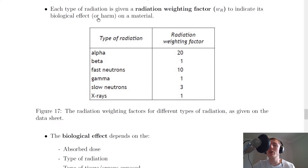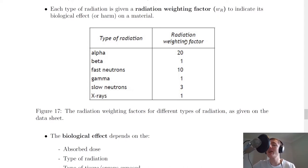In the exam you get given this on the datasheet, which is a table of the types of radiation and their radiation weighting factors. This gives you an indication of how damaging each type of radiation is — the higher the radiation weighting factor, the more likely that type of radiation is to cause damage to the body.